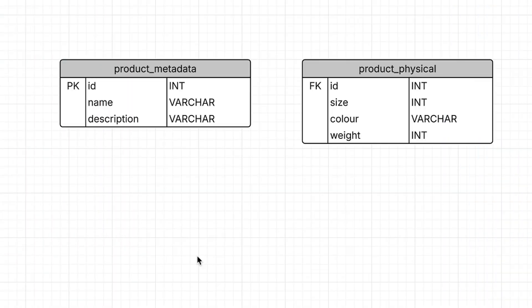Option 2 can be called vertical partitioning, where you can create a new table for each group of attributes. This option is best for when your attributes can be logically grouped together. For our product table, let's say we can group our attributes into two groups: one for metadata like description and images, and one for physical attributes like size and colour. We would have two separate tables with the related columns in each, separating the single wide table into multiple narrower tables.